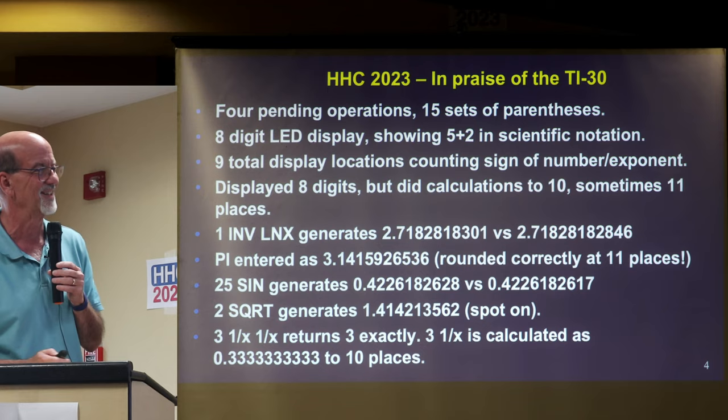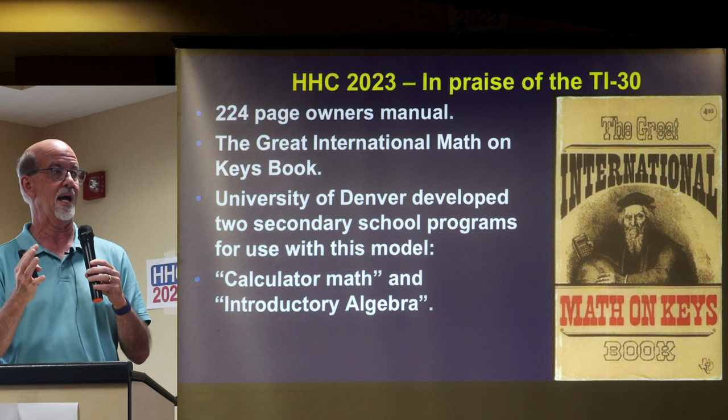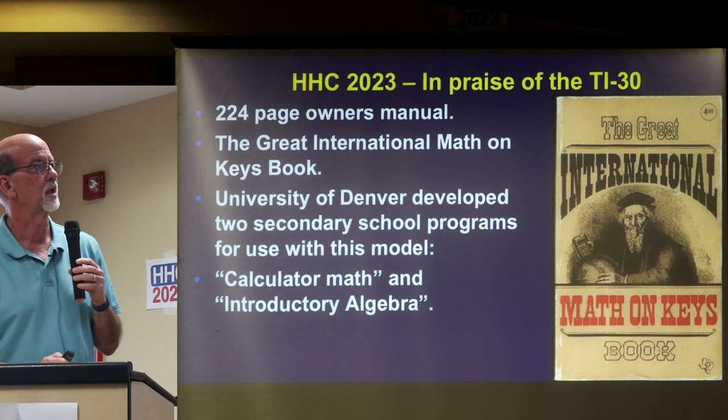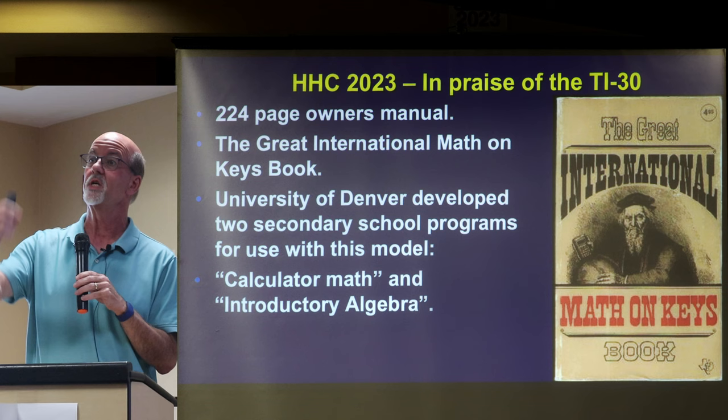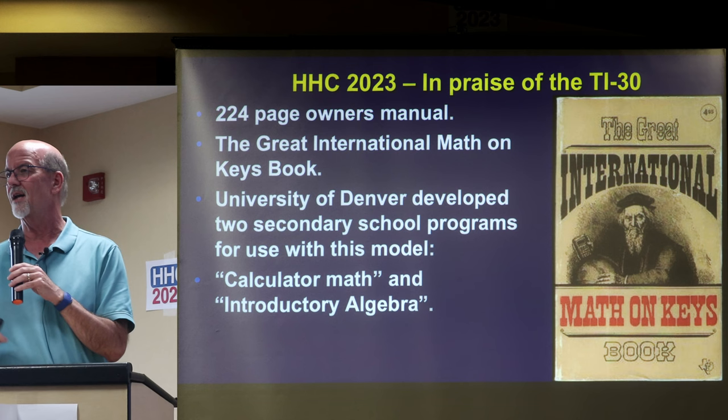It came with a 224-page owner's manual, the great Math on Keys book. The University of Denver developed two secondary school programs for use of this model: Calculator Math was one, and Introductory Algebra was another. TI's probably first real attack into the school system — think about how things might have been different had some other competitor gone after the lower-end schools the way TI did.